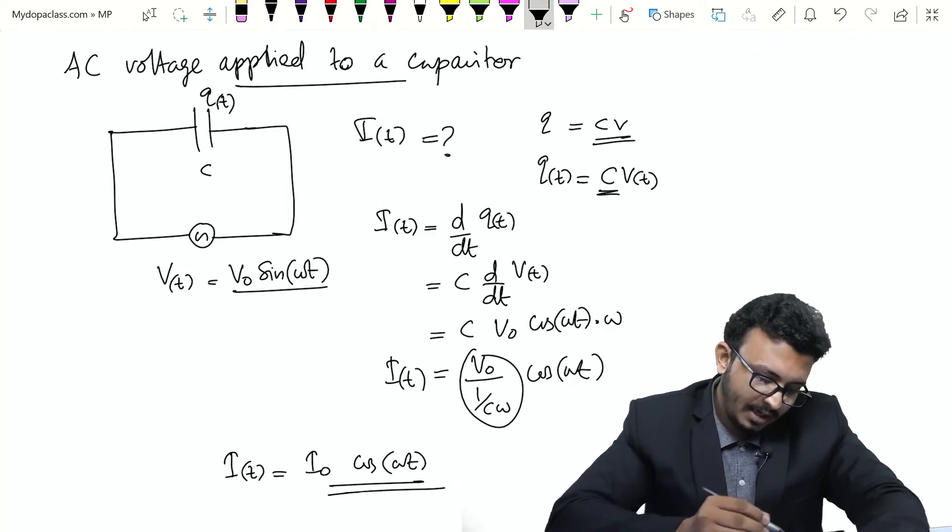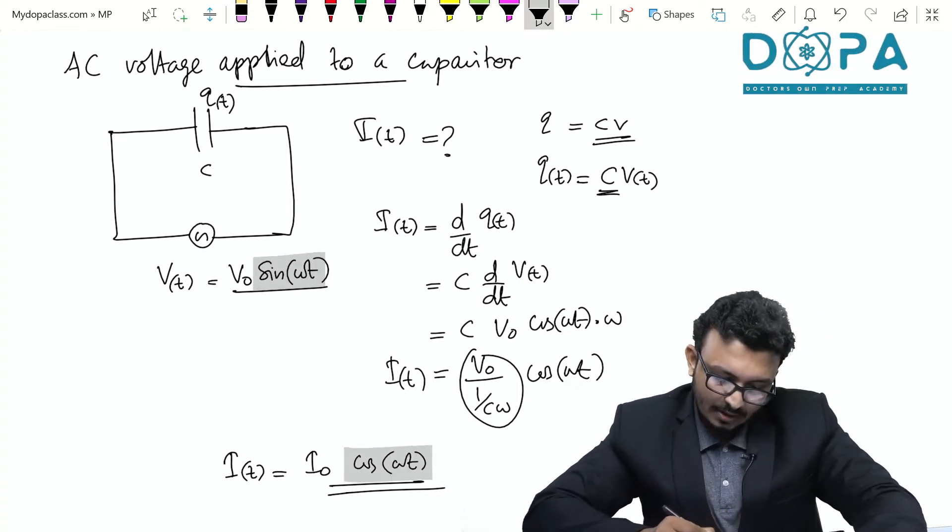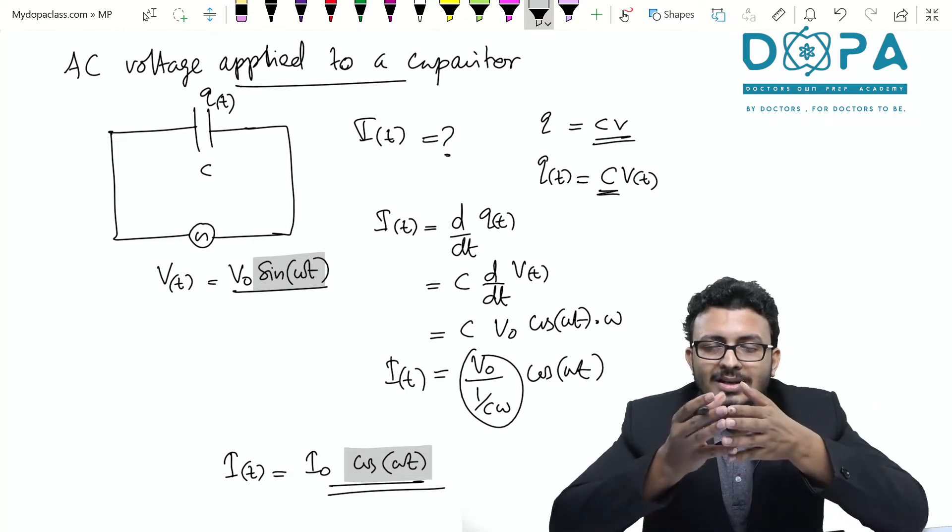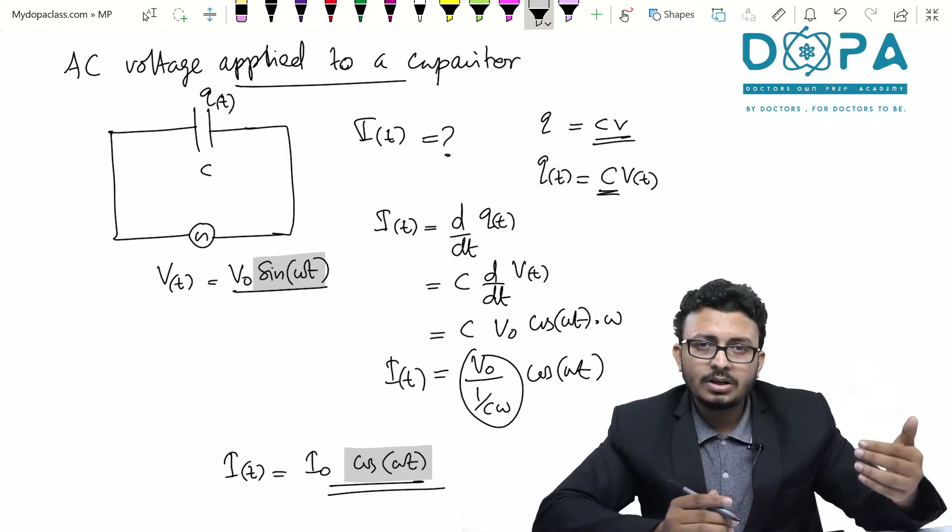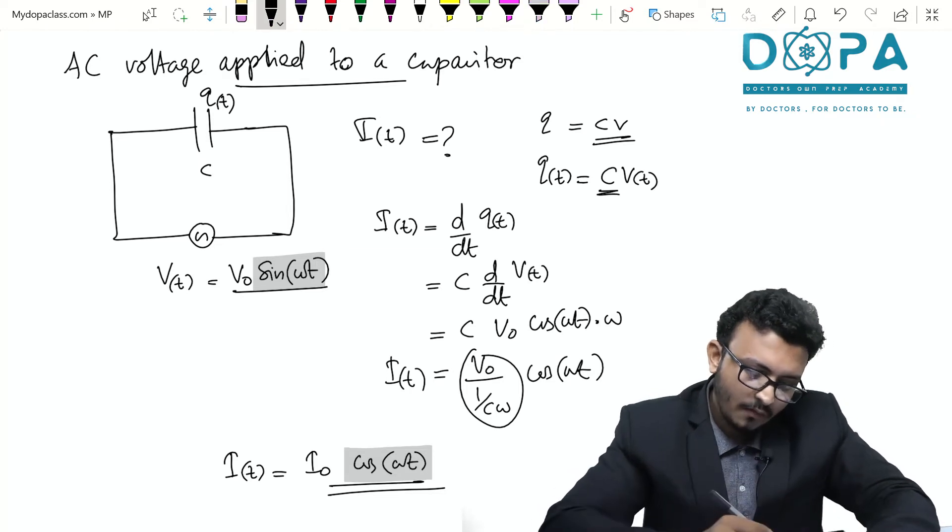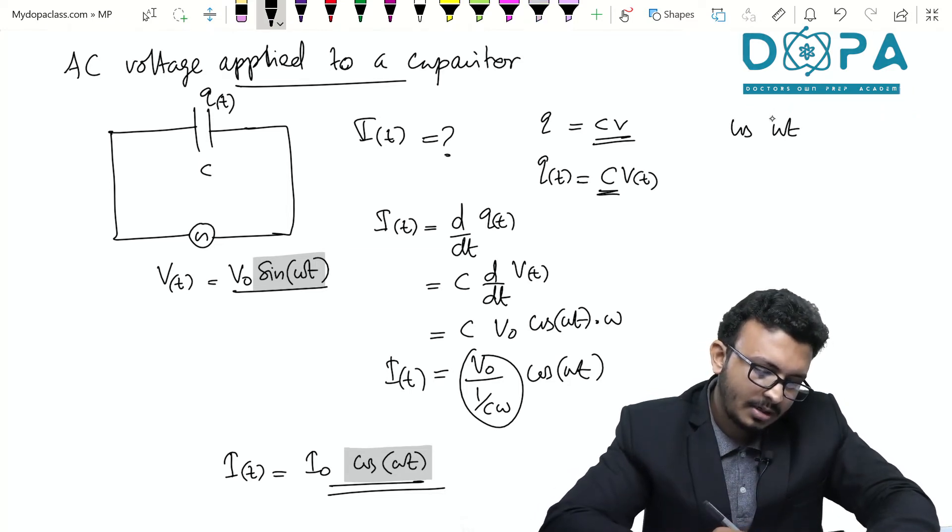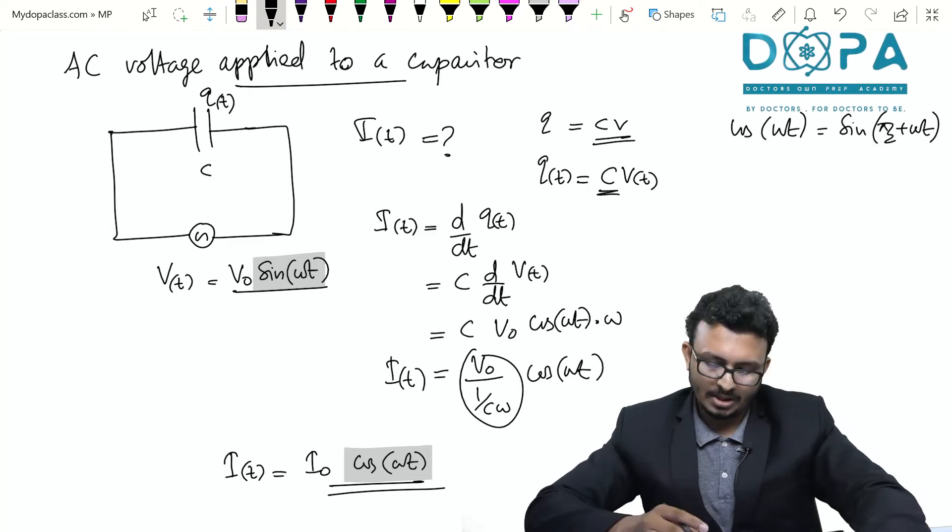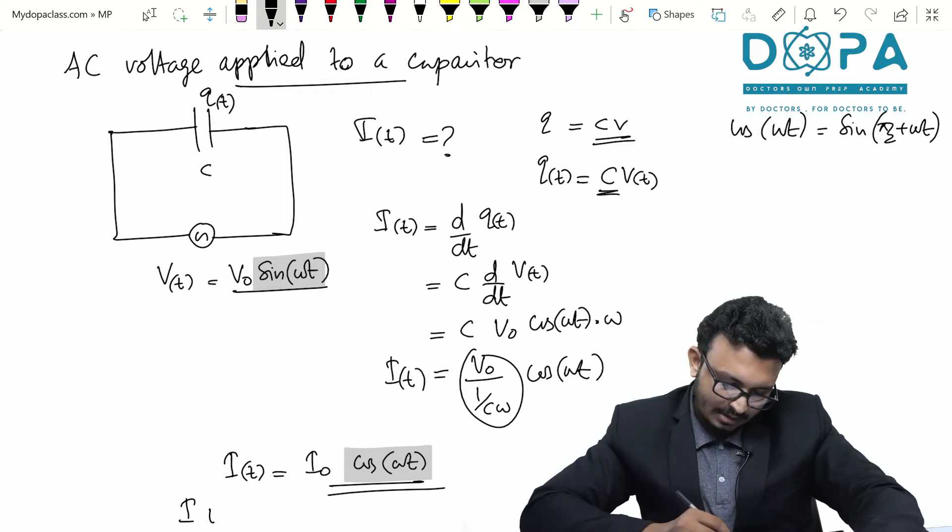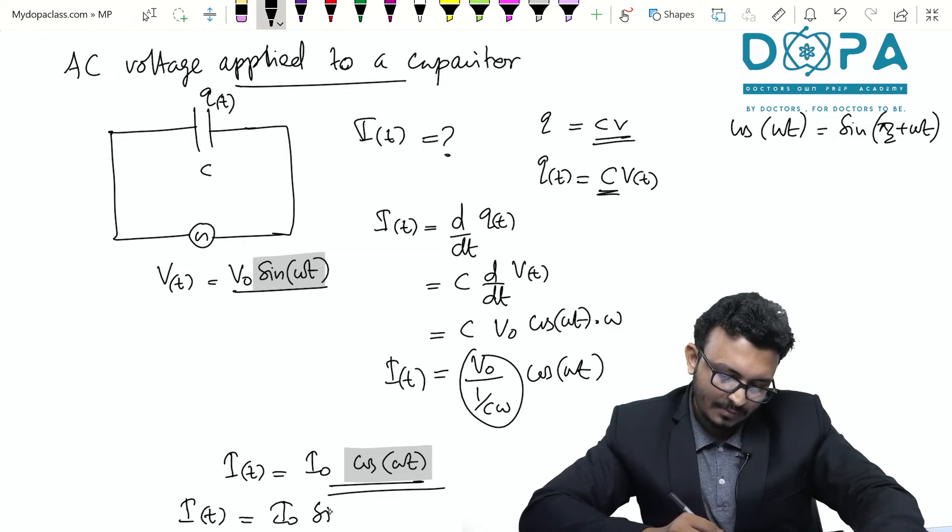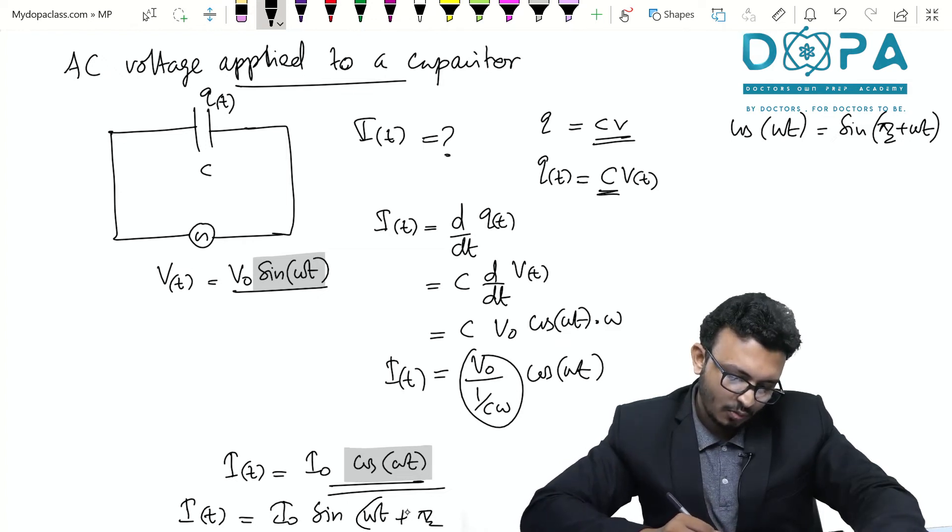Now if you want to compare these two functions by their phase we have to make this to the same function. In case of voltage we have a sine function, in case of current we have a cos function. Now cos ωt can be written as sin(π/2 + θ) or sin(π/2 + ωt). So if you convert that I0 cos ωt to sine then it becomes I0 sin(ωt + π/2).